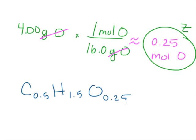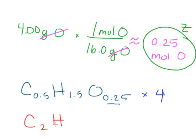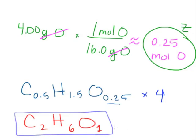Now we want these to be the smallest whole numbers. The smallest subscript that's a whole number for oxygen would be 1, and we have to multiply 0.25 by 4 to get there. So we multiply everything by 4: carbon gets 0.5 times 4 equals 2, hydrogen gets 1.5 times 4 equals 6, and oxygen gets 0.25 times 4 equals 1. And there you have it — this is the empirical formula of ethanol, C2H6O. This happens to be one of those examples where the empirical formula is the same as the actual molecular formula.